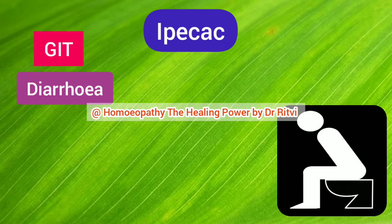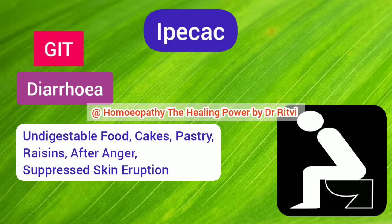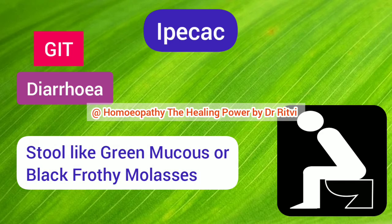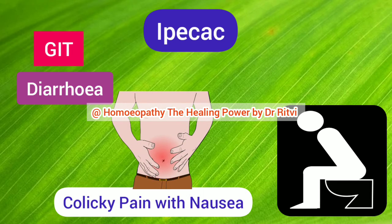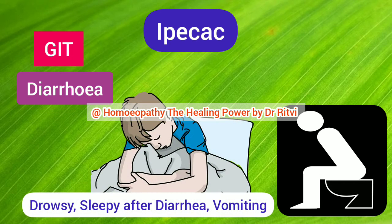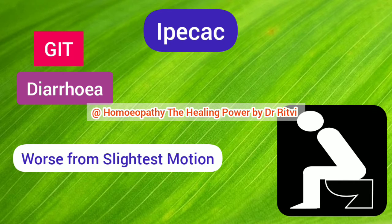Ipecac is also indicated for diarrhea caused by consuming indigestible or rich foods like cakes, raisins, and pastries, or after anger or suppressed eruptions. The character of stool is very unique — it looks like green mucus or sometimes black stool like frothy molasses. There is colicky pain around the umbilical region with nausea. The patient becomes very drowsy and sleepy after vomiting and diarrhea. Diarrhea is present with a clean tongue and absence of thirst. All complaints are aggravated by the slightest motion.